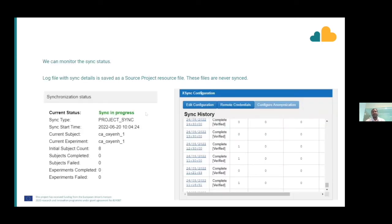After fixing all the settings and clicking Sync Now, you can check the synchronization status as data moves from local to central. The sync history is saved at the source, so you can see whether the sync is completed, failed, and how many subjects were uploaded. For example, we have a sync set to run every hour — automatically, without manual intervention. For live use, you can set it to weekly or monthly, depending on how frequently you upload projects and subjects.